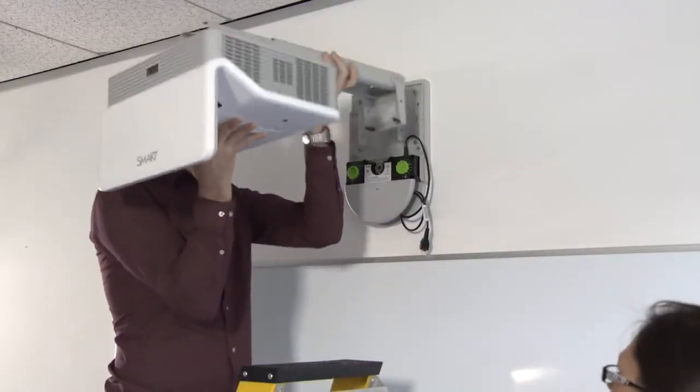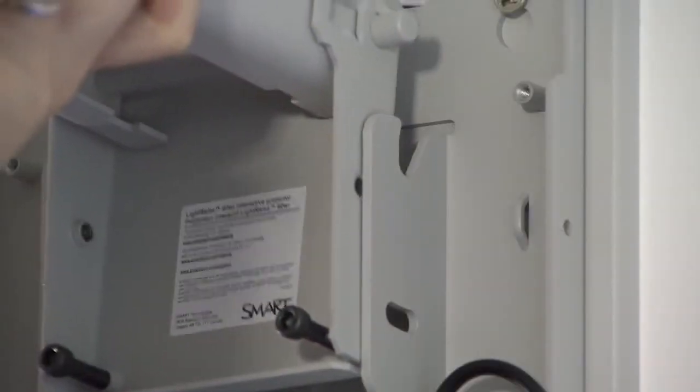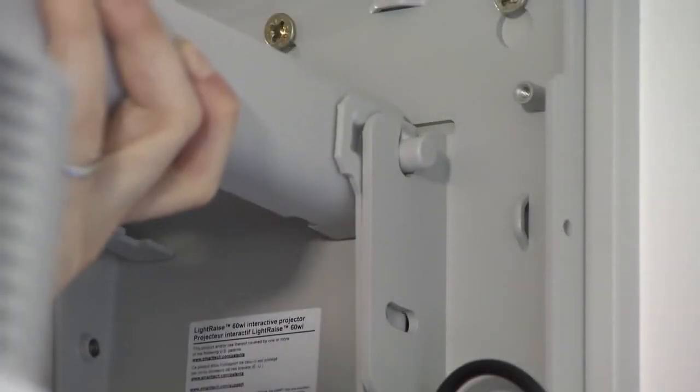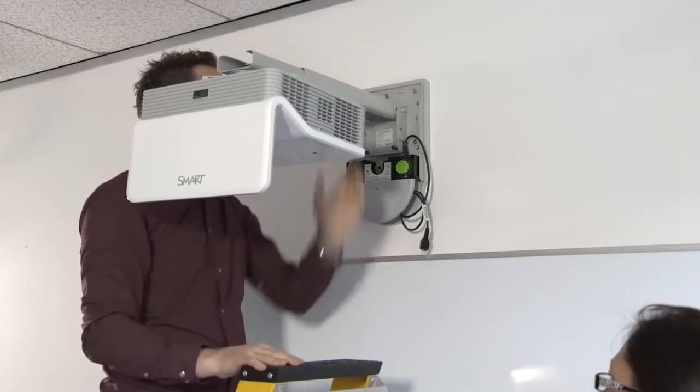Lift the projector assembly onto the bracket and fit the securing bolts. Fit these by hand to allow the projection arm to move during image alignment, as per graphics on page 20 of the install manual.